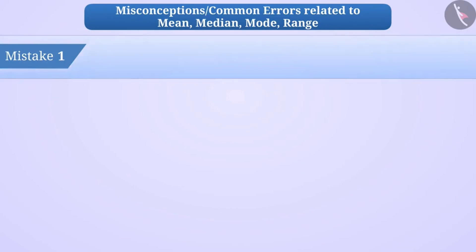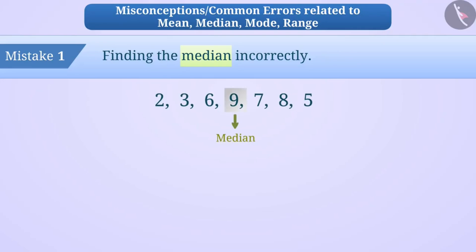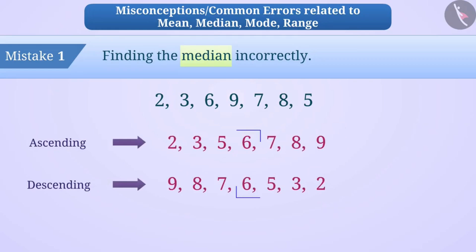Mistake 1: Finding the median incorrectly. To find the median, some children do not arrange the data in order first. For example, they think 9 is the median — but this is a misunderstanding. Only after arranging the data in ascending or descending order can we find the median. After arranging, the middle term is the median, so 6 will be the median.